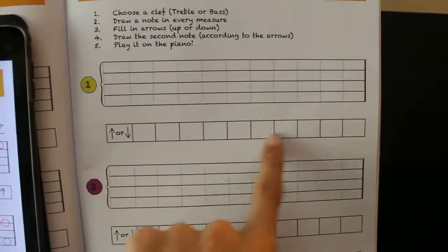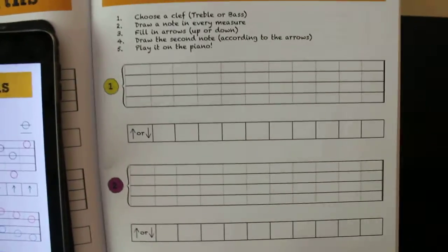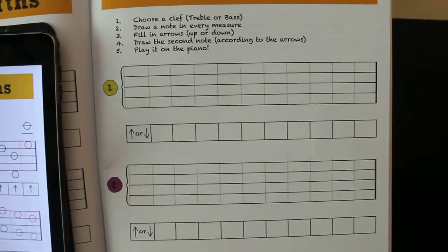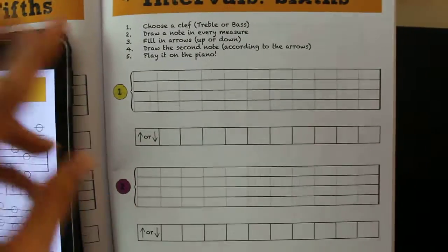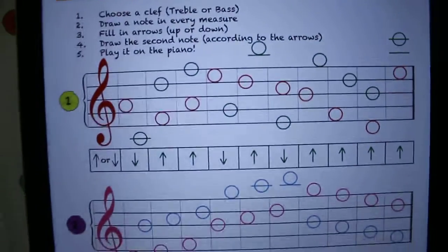Next step, choose your arrows, up or down. Kids fill in randomly, whatever they want. And then, well this, and by the way, these arrows need to be a different color. See, so let's go, I guess we got Christmas colors over here, red and green.